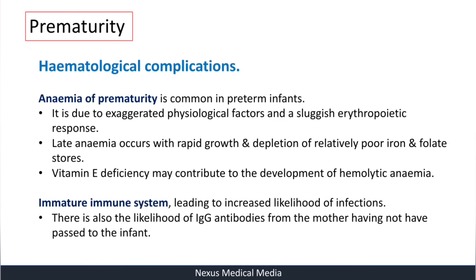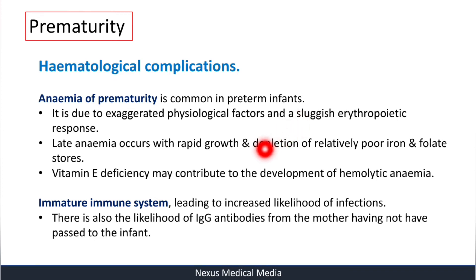Hematological complications include anemia of prematurity, which is very common. It is due to exaggerated physiological factors and a sluggish erythropoietic response — because erythropoietin is produced in the kidney, and renal immaturity reduces erythrocyte production. Late anemia occurs with rapid growth and depletion of relatively poor iron and folate stores. Vitamin E deficiency may also contribute to hemolytic anemia.